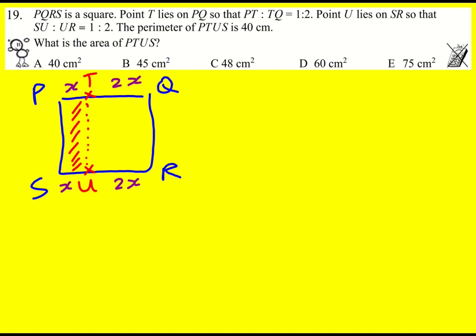Now we're told that it's a square, which means the height is going to be 3x because x plus 2x is 3x and they're the same length, and then this is also 3x.